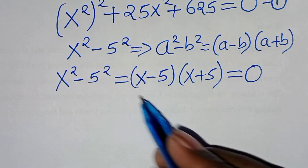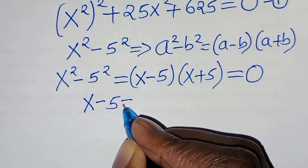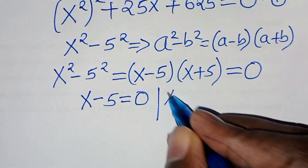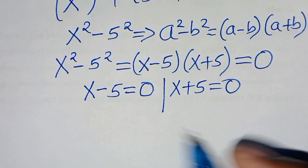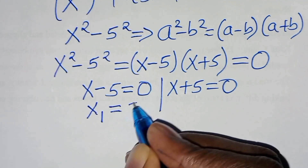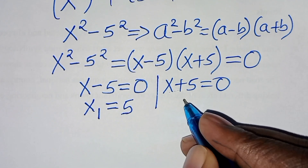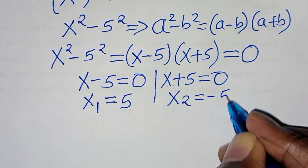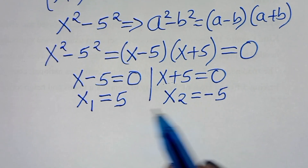So this implies that x minus 5 equals 0, giving x₁ equals 5. And x plus 5 equals 0 implies x₂ equals minus 5. So these are the first two solutions that we have.